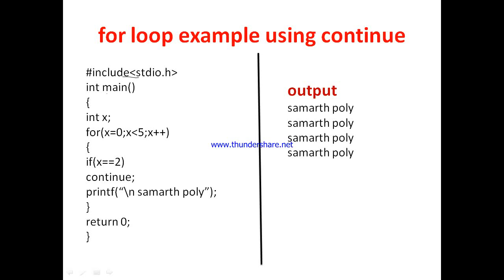Now let us see the first example. The header file is declared, the main function is defined, and variable x is declared. Here x is initialized to 0, the condition is x less than 5, and the increment is x++. The loop executes for x = 0, 1, 2, 3, 4 — five times. When x becomes 5, the condition becomes false and the loop terminates.